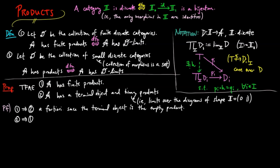For the converse, let D be a diagram with I finite discrete. If I is empty, then we are done since the terminal object already exists in A by the hypothesis.